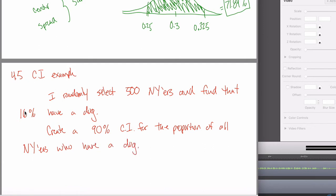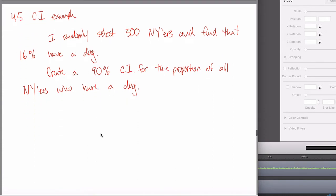The population proportion is probably relatively close to 16% because I looked at 500 New Yorkers. But maybe in my sample, just by dumb luck, there are a couple extra people who have a dog — maybe really only 15% of the population has a dog, and in my sample I got 16% because this is just a sample proportion. So what we're supposed to do is, based on our sample data, make an inference about the population parameter.